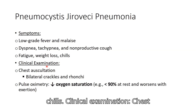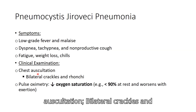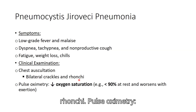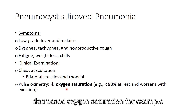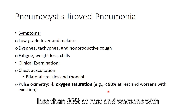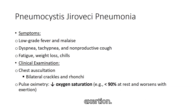On clinical examination, chest auscultation reveals bilateral crackles and rhonchi. Pulse oximetry shows decreased oxygen saturation, for example less than 90% at rest, which worsens with exertion.